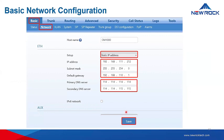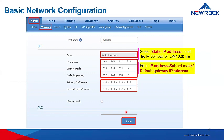In the basic network configuration, you can set it to static IP to assign a fixed IP address, and fill in the IP address, subnet mask, and default gateway IP address. You can also fill in the primary and secondary DNS server and click save.